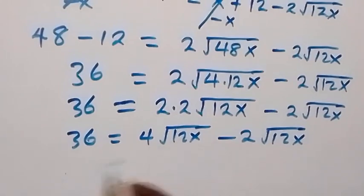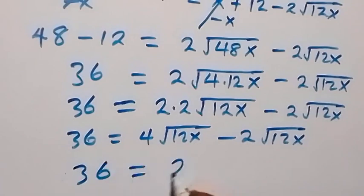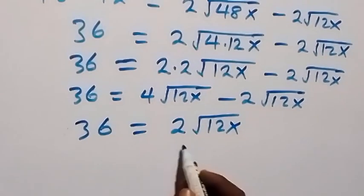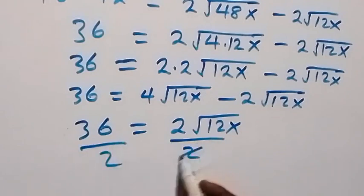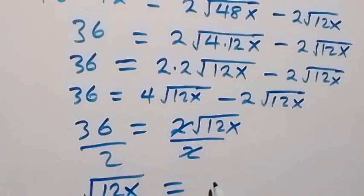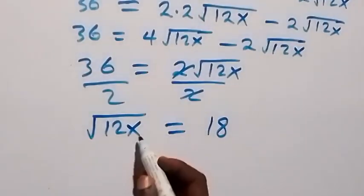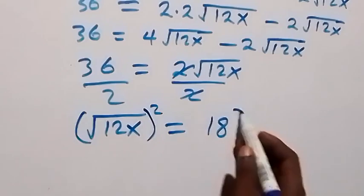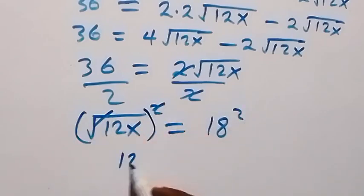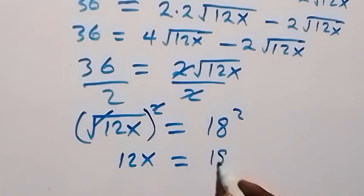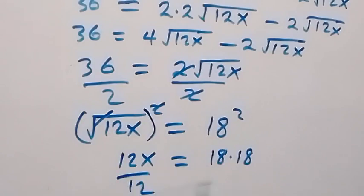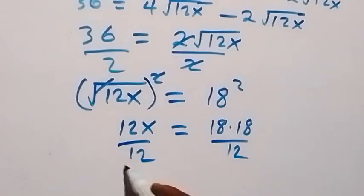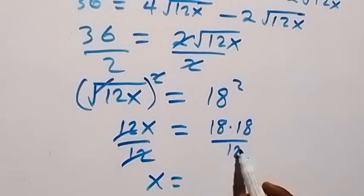Since what we have inside the roots are the same, we can subtract the coefficients: 36 equals 2 root 12x. Dividing both sides by 2, we get root 12x equals 18. Squaring both sides, 12x equals 18 squared, which is 18 times 18. Then dividing both sides by 12, the 12s cancel.